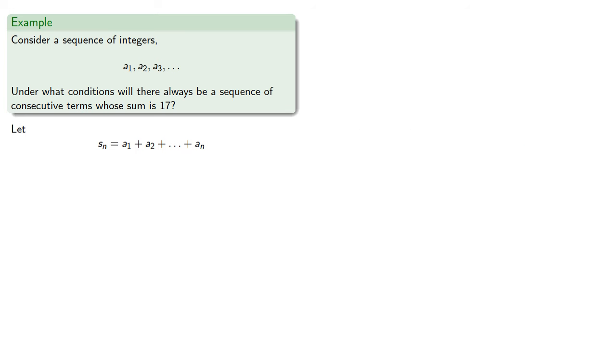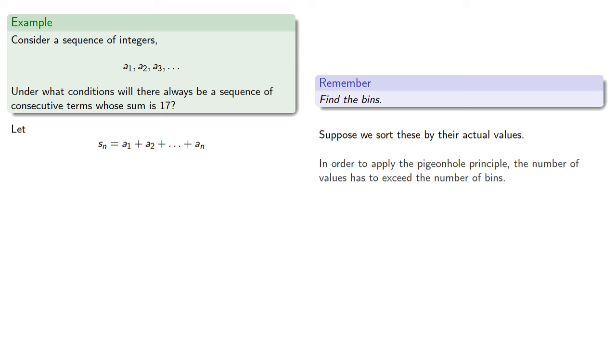So remember the key to using the pigeonhole principle is to find the bins. Suppose we sort the partial sums by their actual values. Now, in order to apply the pigeonhole principle, the number of values has to exceed the number of bins. And if our bins are the actual values, this means there has to be a maximum value for any of these partial sums.